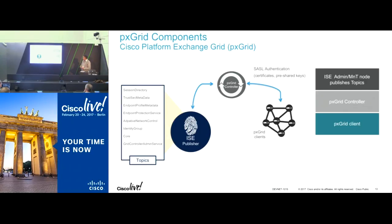PXGrid messaging service is a service instantiated in Identity Services Engine. The administrator goes to ISE and enables the service on one of the appliances. Once the service is enabled, the PXGrid server gets instantiated. The PXGrid server has two pieces: a controller piece and a data server piece.